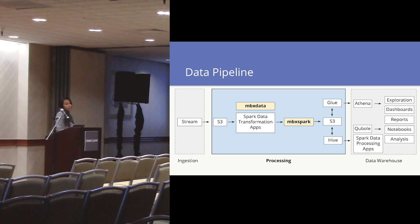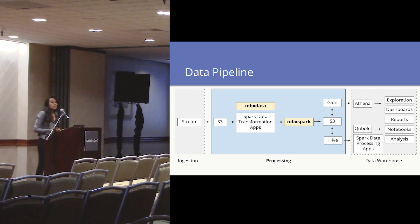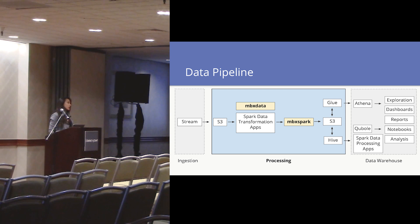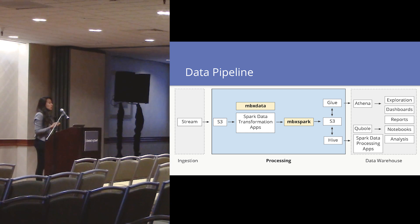Let's take a look at what our data pipeline looks like. We have data coming in through ingestion, and it all ends up in our data lake, which is S3. Then we have Spark applications, which we call data transformation applications, that take data from S3, clean it up, define a schema, partition it, and write it to the final data warehouse. We use a tool called MBX data that allows us to manage these Spark applications. Spark applications also use a Python module called MBX Spark, which is installed on all our Spark clusters, to ensure we're writing to both our metastores — Glue and Hive — in the same manner.